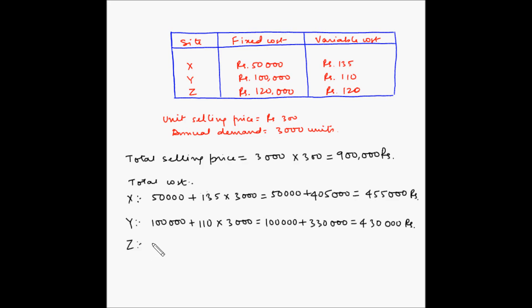And for Z, 120,000 plus 120 multiplied by 3000. So 120,000 plus 360,000, and this is equal to 480,000 rupees.